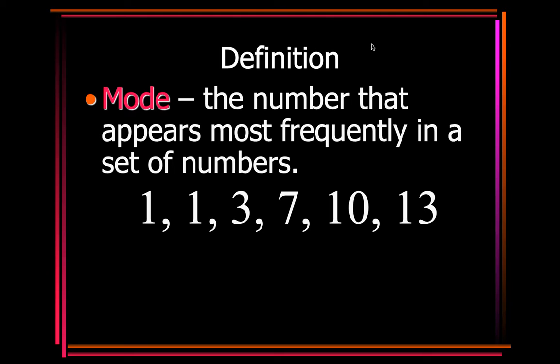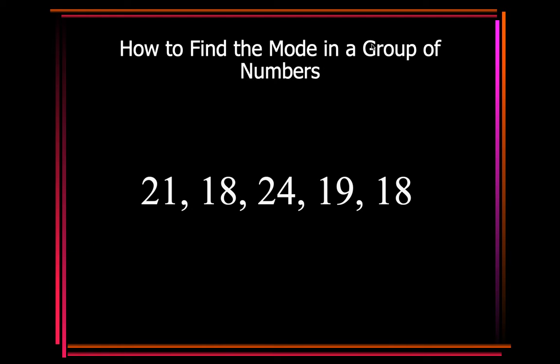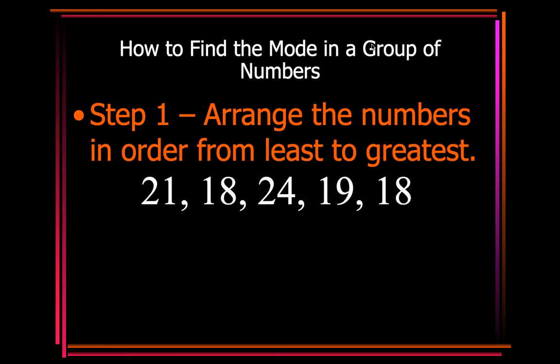So again, you'll notice these numbers are in order from least to greatest. And what number appears the most, which would be the number 1. So looking at this data set, they are not in order least to greatest, so you need to do that first. That's step one, always.